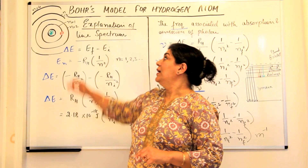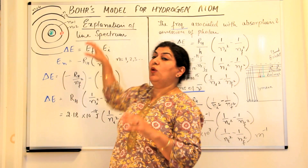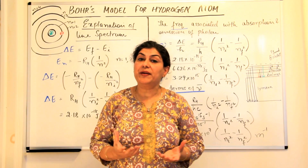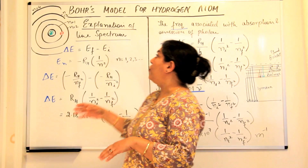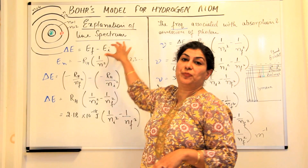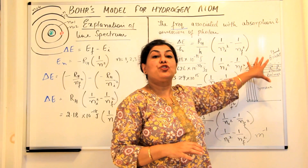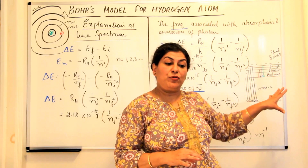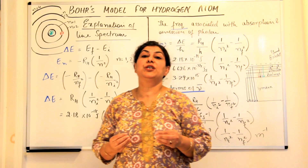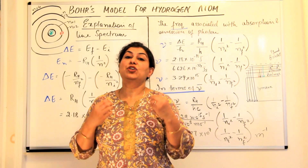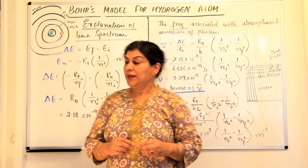Now in this video, I'll tell you what was Bohr's explanation numerically for the line spectrum — that is, how did Bohr explain the line spectrum obtained for hydrogen numerically?